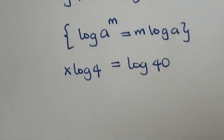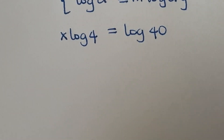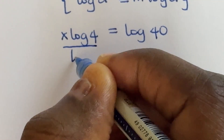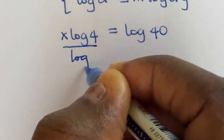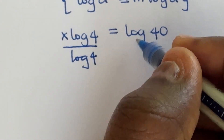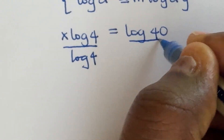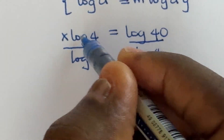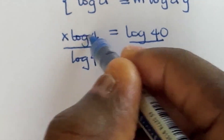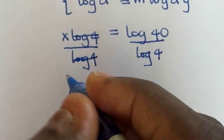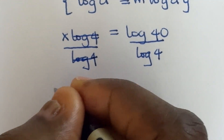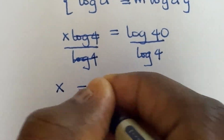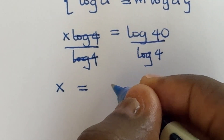We can divide through by log 4 on both sides, so that this divides this and we are left with just x on the left hand side, and then equal to log 40 divided by log 4.